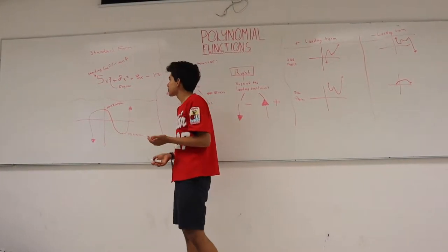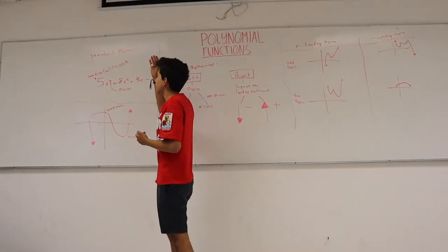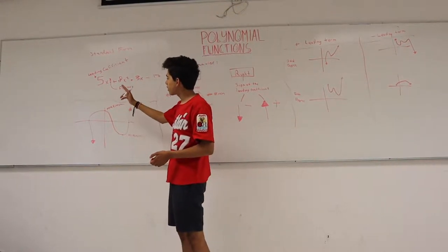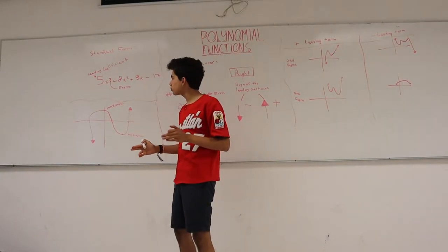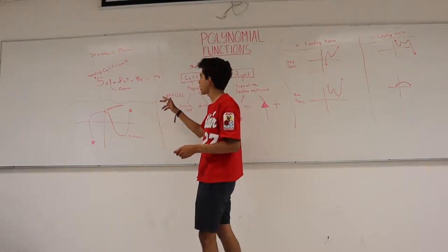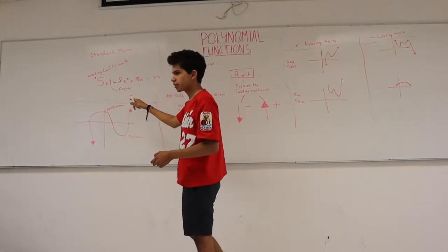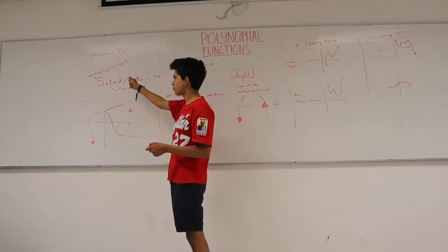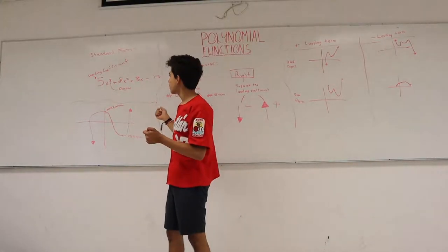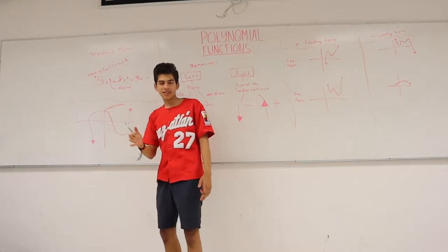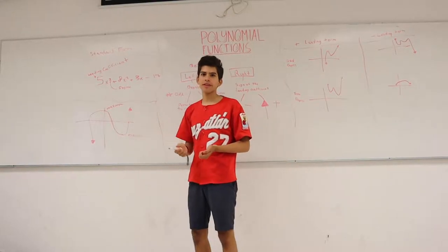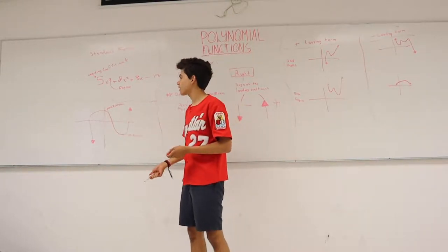To understand polynomial functions, we first need to understand how the standard form is divided. The leading coefficient is the number which is followed by the highest exponent. So this term, 5x to the third, is the highest term in this polynomial function — this will be the leading coefficient and overall the leading term. The degree of this polynomial is going to be three, since it's the highest exponent. The highest exponent of any polynomial function is going to be the degree.